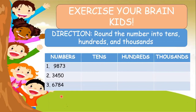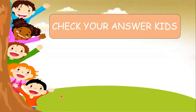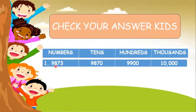Let's check your answers. For 9,873, let's answer first in the tens. The number in the tens place is number seven, and the number to the right of seven is number three. Since three is less than five, number three will become zero. So the answer for tens is 9,870.